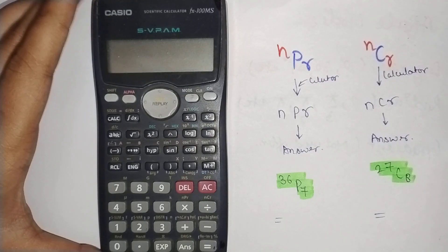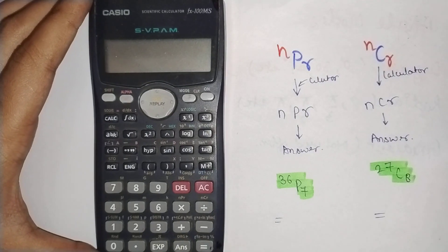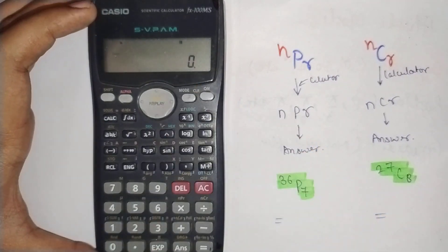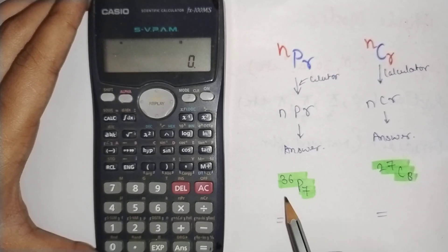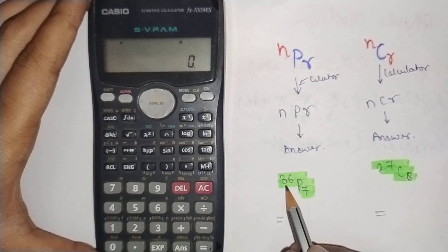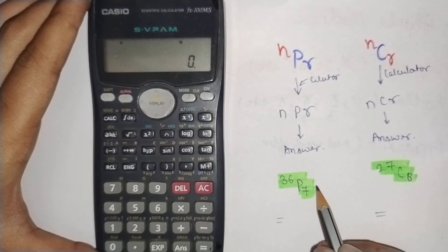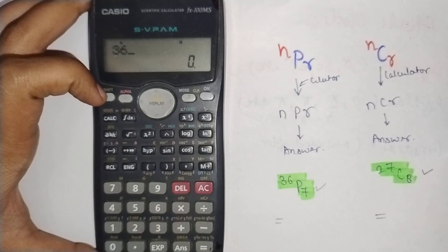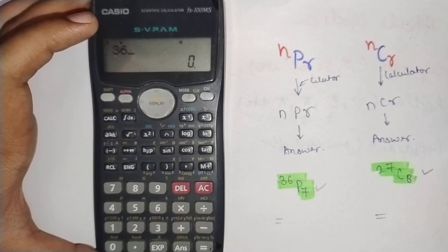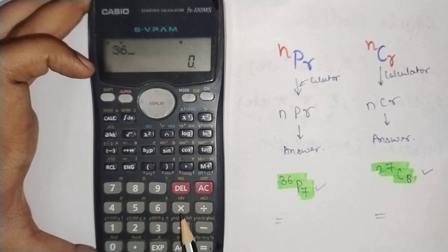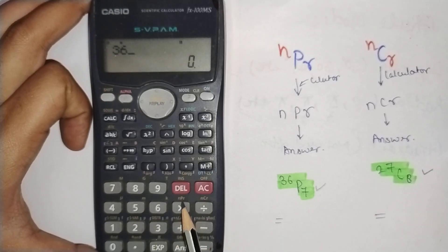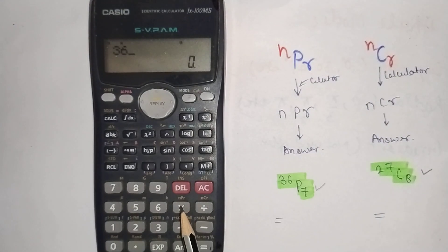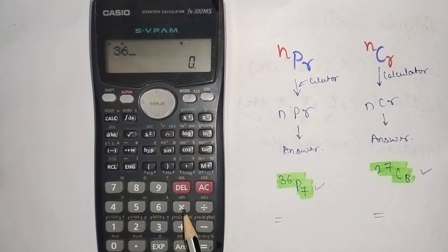We can calculate permutations and combinations — here is how. Press the number; for example, I am calculating 36, then press Shift, and you can see the P R option. Press P.